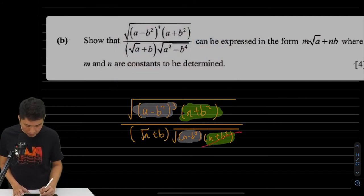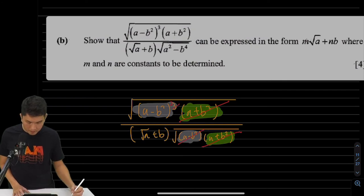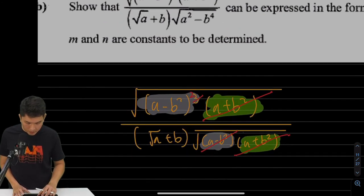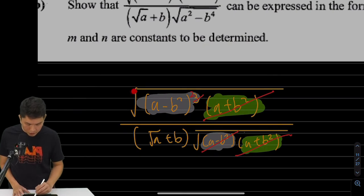This cancels with this. This one reduces the power to just a square. And then if you think about it, you have a square root, and you have a square here. The square root will cancel with a square.